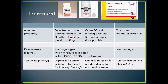Selegiline — Anipryl — is a dopamine reuptake inhibitor used for pituitary-dependent Cushing's. It can also be given for old-dog dementia and cardiac issues. It is contraindicated with MAO inhibitors.